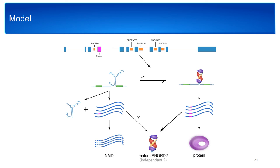Based on our results, we built a model of EIF4A2 regulation by the embedded SNORD2. There is a balance between the folding of SNORD2 with itself and the folding with the downstream intron. When SNORD2 folds canonically, this leads to production of transcripts having exon 4, which will give EIF4A2 proteins and mature SNORD2 snoRNP. In contrast, when SNORD2 folds with the downstream intron, this leads to production of a stable SNORD2 intron intermediate as well as transcripts lacking exon 4, which are subsequently degraded by the NMD pathway. Since no correlation was observed between SNORD2 and SNORD2 intron, it is unclear if the SNORD2 intron intermediate will ever lead to mature SNORD2 snoRNP.